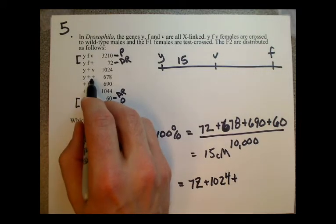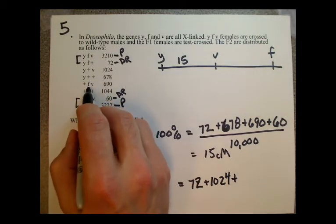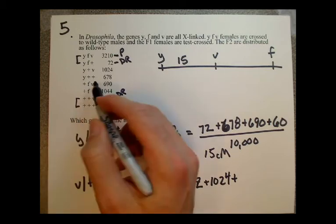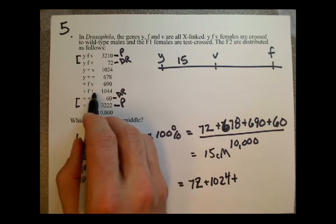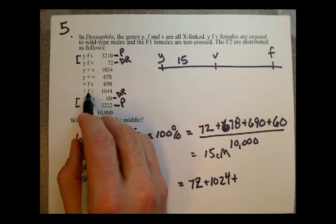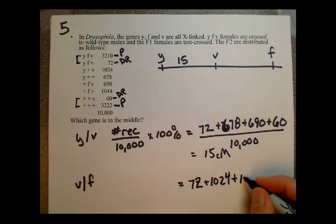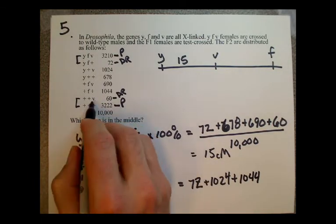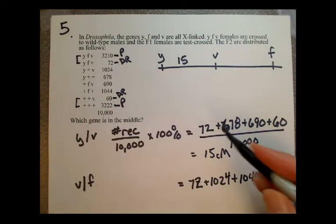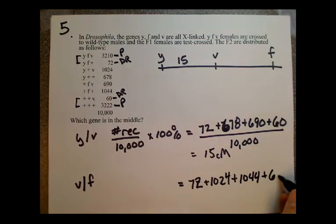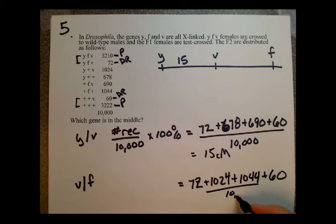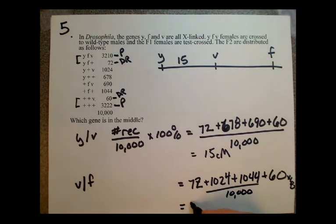Here they're both wild type — no recombination. Here they're both mutant — no recombination. Here we've switched, there's been a recombination event: one's mutant, one's wild type, so we add 1044. And finally this double recombinant — we've had a recombination event here. If we add that all up, divide by 10,000, and multiply by 100, we get 22 centimorgans.